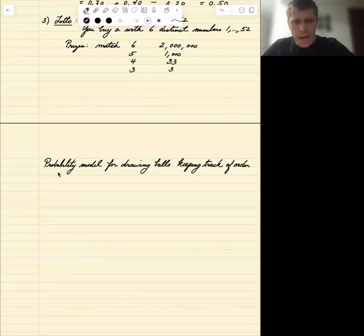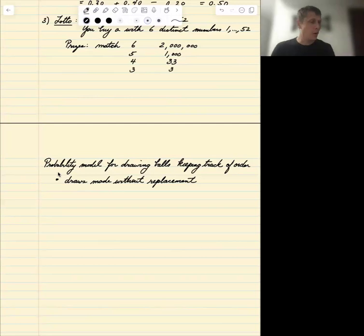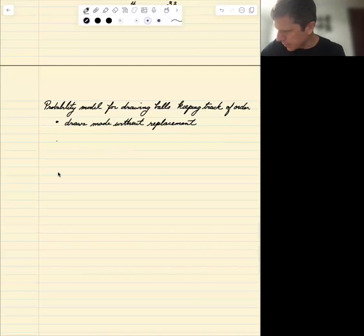And the draws are made without replacement. What does that mean? That means that we have 52 balls and we're going to pick first ball out of the box. Then we're going to pick a second ball. We're not going to put the first ball back before we pick the second ball. Let's define the sample space.